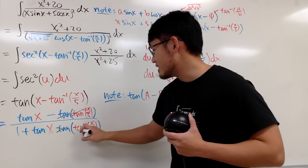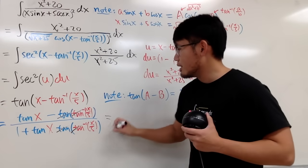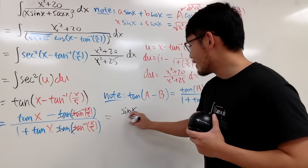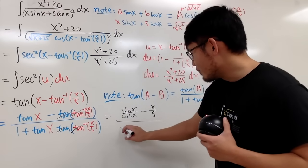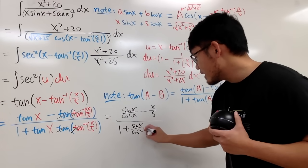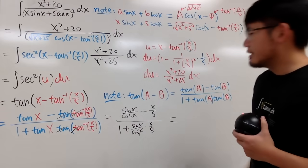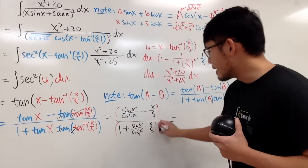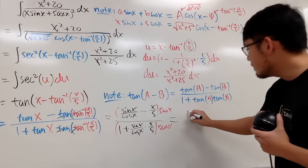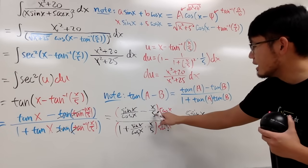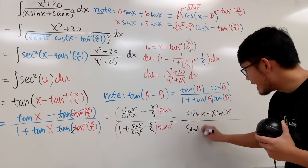Those cancel out nicely. Expanding: tan x = sin x / cos x, and tan(arctan(x/5)) = x/5. Multiplying top and bottom by 5·cos x clears the complex fraction — the top becomes 5·sin x − x·cos x, and the bottom becomes 5·cos x + x·sin x, which matches exactly the original denominator of the integral.